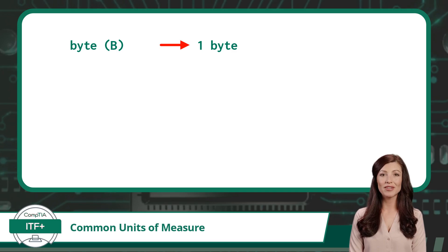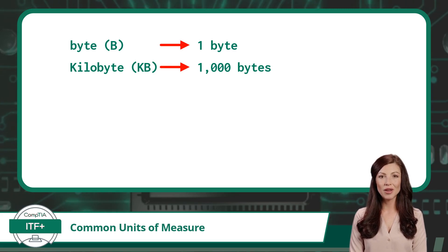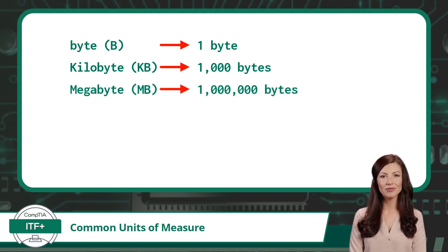These same exact prefixes also apply to the base measure of byte. Let's start with a single byte and add our first prefix: kilo. Kilo means thousand, so a kilobyte equals 1,000 bytes. Our next prefix is mega. Mega means million, so a megabyte equals 1,000,000 bytes.